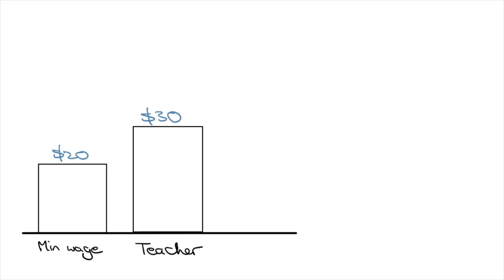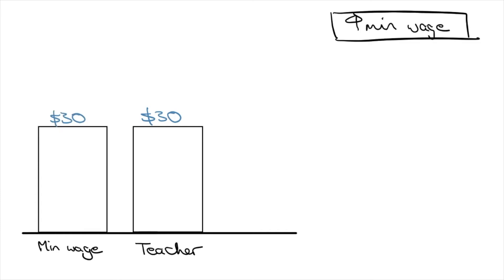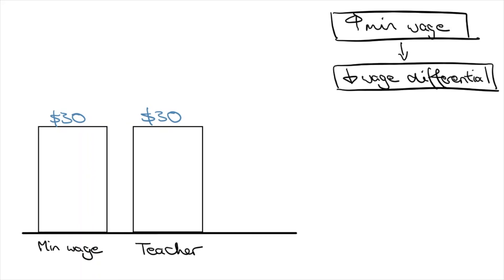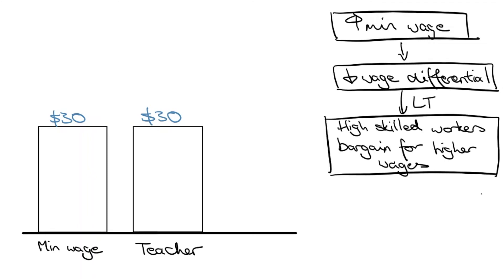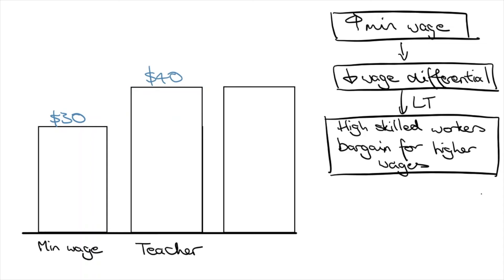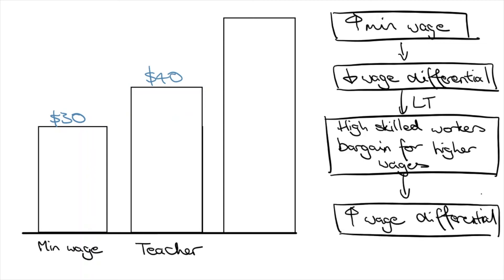Finally, I want to address the argument that income inequality would be lessened by increasing the minimum wage — it can also be argued that this is redundant in the long term. If a teacher earns $30 an hour and the minimum wage is raised from $20 to $30, that teacher would exercise their bargaining power to negotiate a higher wage matching their skill set. Doctors, engineers, and other professions would also raise their incomes accordingly. So in the long term, we return to the same level of inequality but now at higher prices. And minimum wages would be raised again to keep up with inflation, and the cycle repeats.